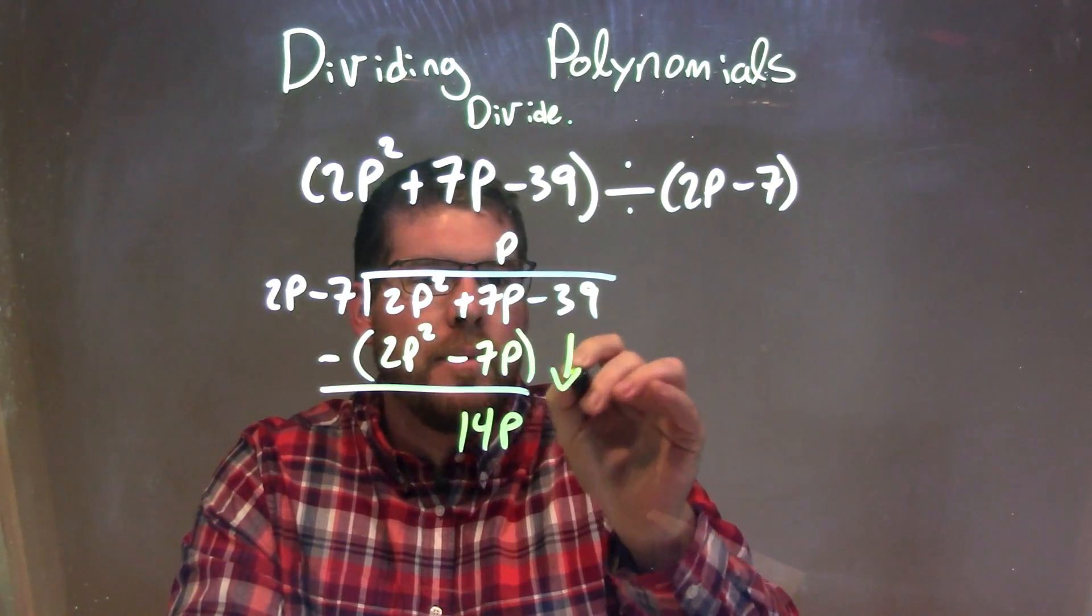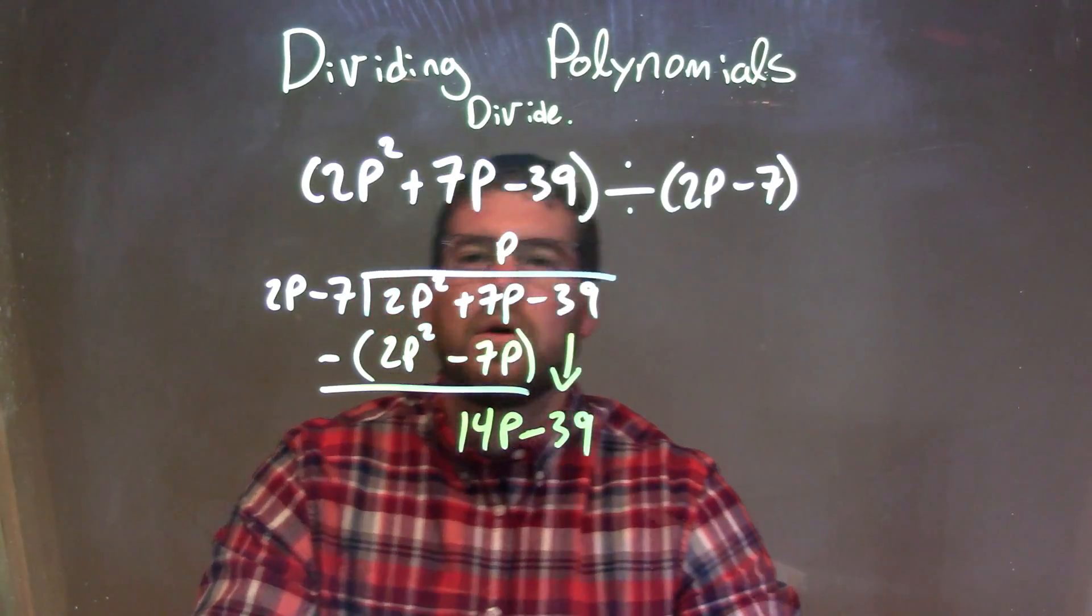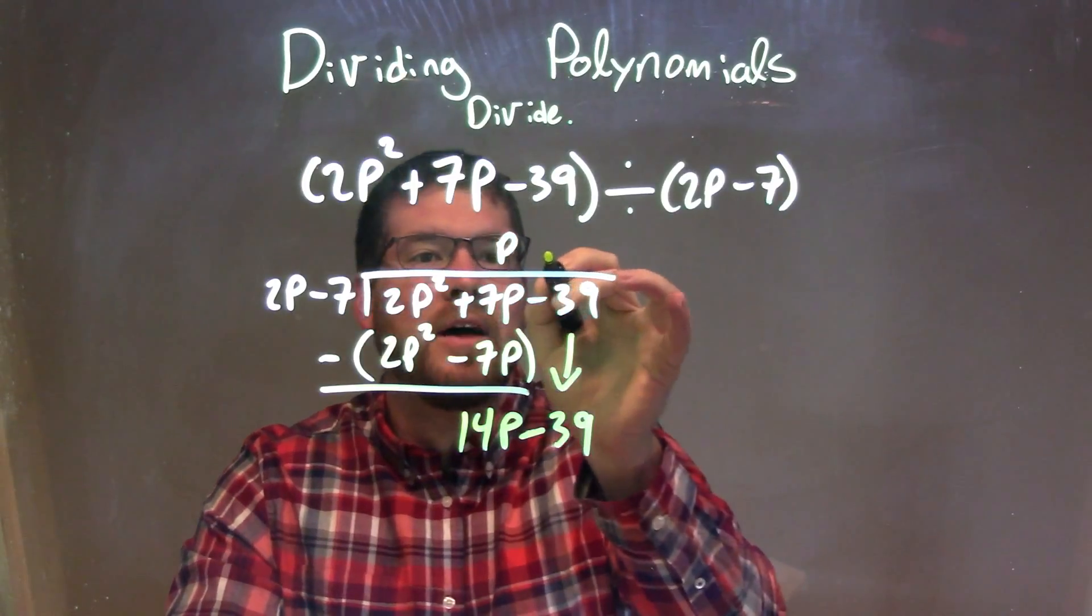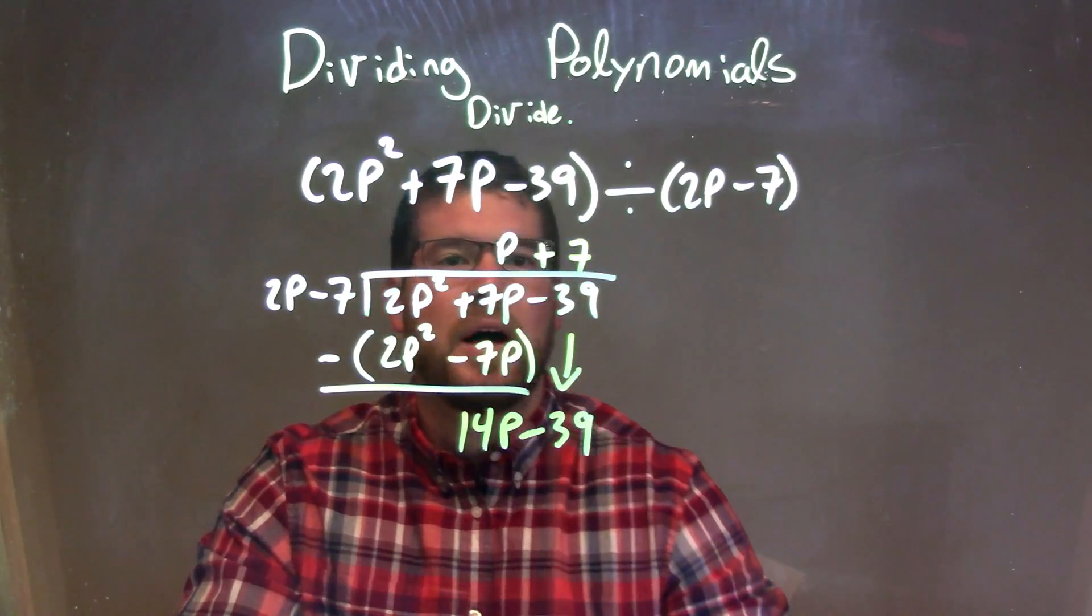We then bring down the minus 39, and we're going to do this again. What times 2p gives me 14p? That's just a positive 7.